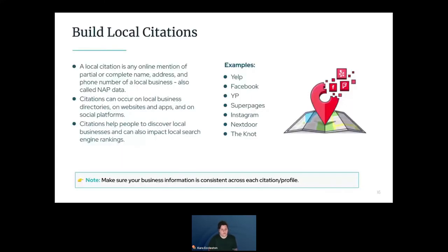Now you'll want to start building local citations. Local citations are a very important element for local SEO — they help establish credibility with Google. These are essentially online mentions of your business NAP, which stands for Name, Address, and Phone number — basic business info. Things like business directories such as SuperPages or Yellow Pages, review sites like Yelp, and social platforms like Facebook and Instagram are all considered local citations. When you build these, make sure your business info is consistent across each platform, especially the name. If your Google Business Profile says 'ABC Photography,' make sure your Facebook page also says 'ABC Photography' — not 'ABC Photography Studio.'